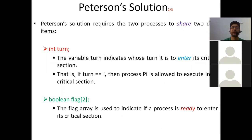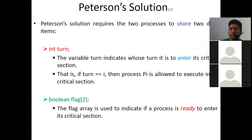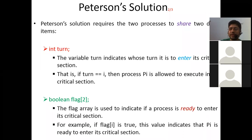We also have a boolean flag array. Why boolean? To put either true or false. This flag value is for each individual process. Suppose P0 is interested in going into the critical section — flag[0] will be set to true. Similarly, if PJ wishes to enter its critical section, flag[J] will be set to true; otherwise it will be false. If flag[I] is true, this indicates that PI is ready to enter its critical section.